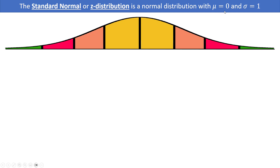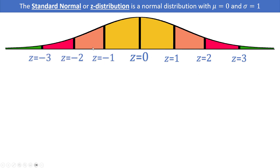Since the mean is 0, we can put a Z value of 0 right in the middle of our distribution. Typically when we're drawing lines on a normal distribution we're going to be counting by the standard deviation, which is 1 in this case. So we'll have Z equals 1, 2, and 3 as we move towards the right, and negative 1, negative 2, and negative 3 as we move towards the left.